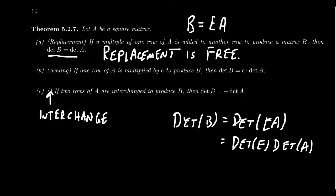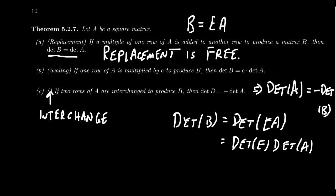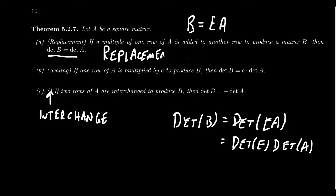The last operation is interchange. If you interchange two rows, that affects the determinant by a factor of negative one. Going from A to B, if you want det(A), you divide by negative one — which is the same as multiplying by negative one. Conveniently, the inverse of multiplication by negative one does the exact same thing, so you don't have to worry about it. And since replacements are free, there's no change to the determinant, so if you forget to take the reciprocal, no big deal.